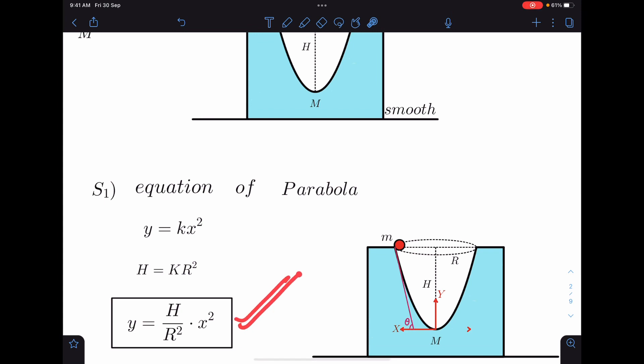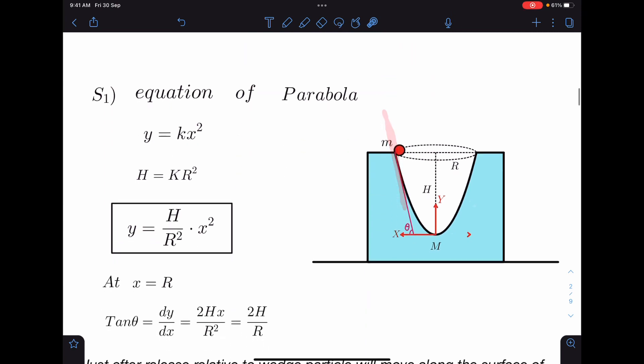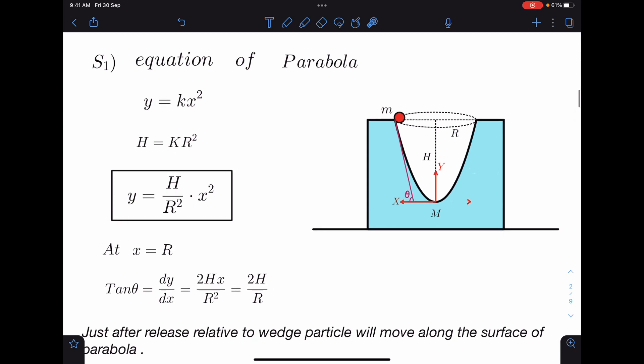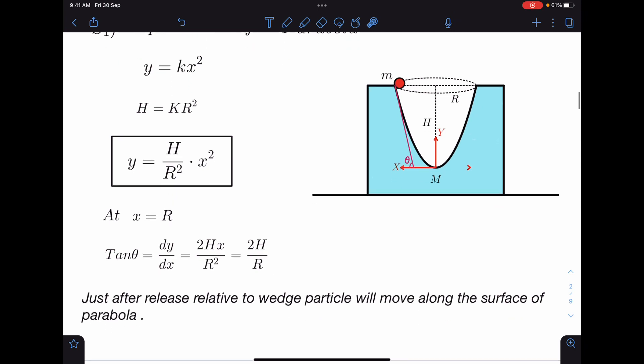Now we will get the slope of inclination also, that is tan θ at x = r. So tan θ also we will get as 2h/r, which is 2hx/r. This is the parabola equation.